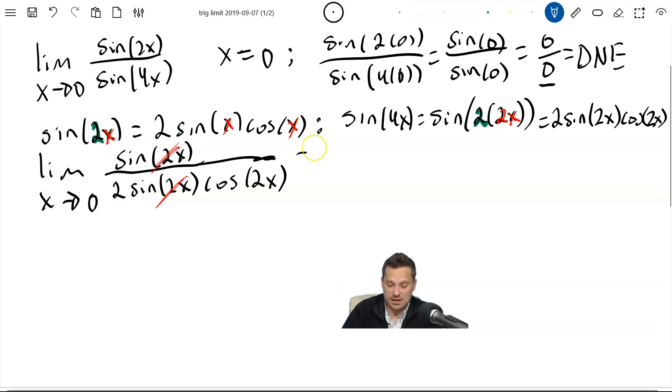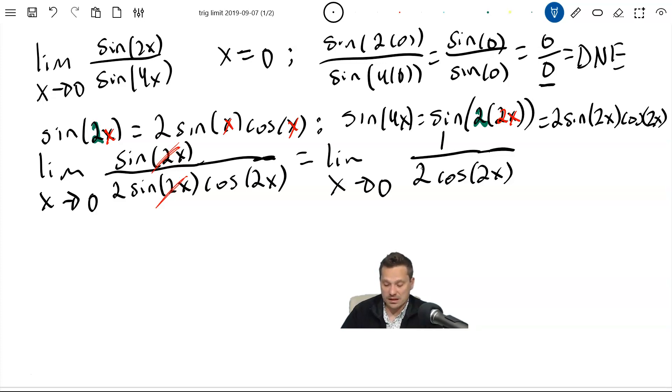So let me finish this up. I'm going to have, in other words, now the limit as x approaches 0 of 1 divided by 2 cosine of 2x. But this is perfect because you can just now plug 0 into the cosine and you're going to get a 1 out. But let's take a look.